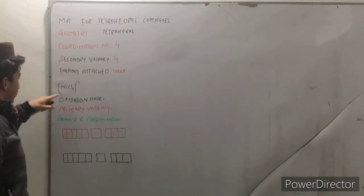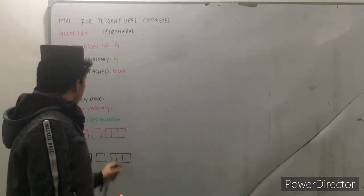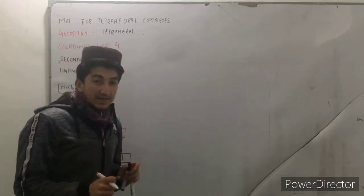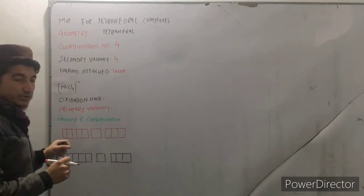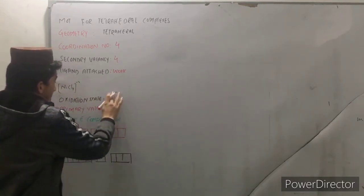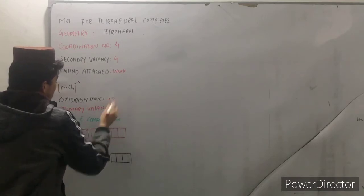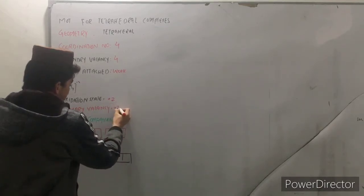We have taken an example of tetrahedral nickel chloride. In this case the oxidation state of nickel is plus two. You can see the complex has minus two charge, so the oxidation state which is plus two and the primary valency in this case is also plus two because oxidation state is also known as the primary valency.